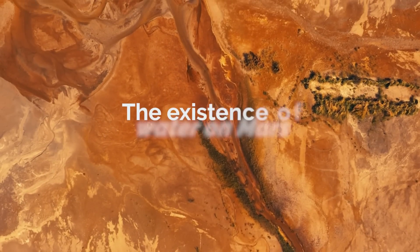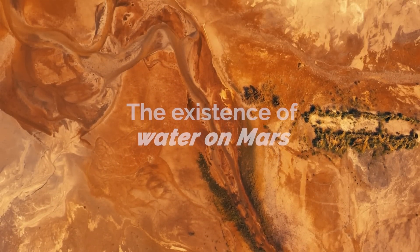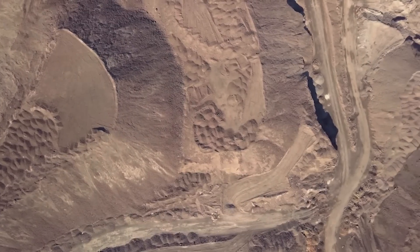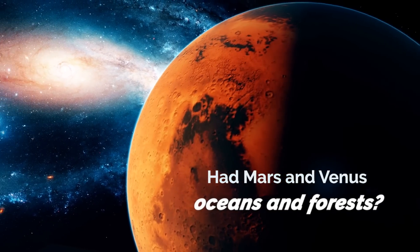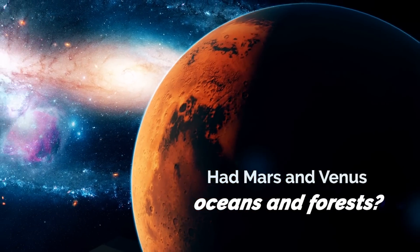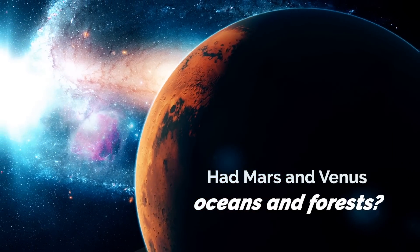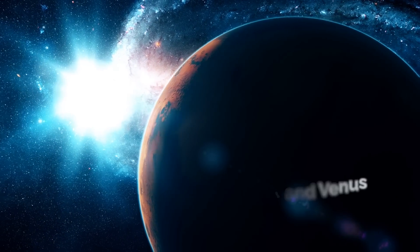The most recent research has shown the existence of water on Mars, and simulations of the climatic evolution of Venus indicate that it could also have had water in the past. Being so, were Mars and Venus planets with oceans and forests full of life like Earth millions of years ago? Let's find out.